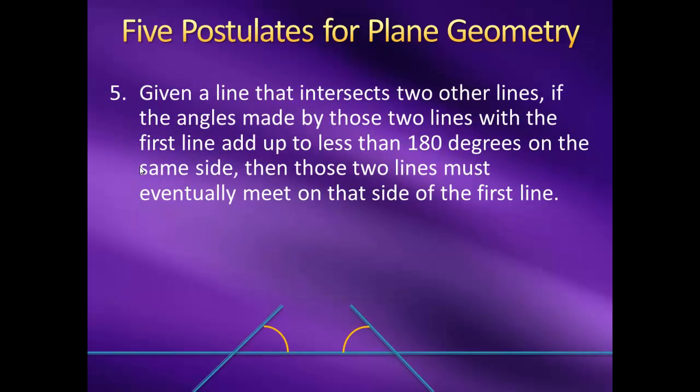The fifth axiom states that, given a line that intersects two other lines, if the angles made by those two lines with the first line add up to less than 180 degrees on the same side, then those two lines must eventually meet on that side of the first line. Whoa, hold up a minute. That's way more complicated than the previous four axioms. How can that possibly be something we're supposed to just assume?